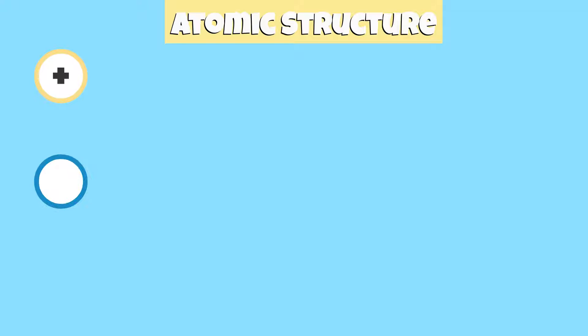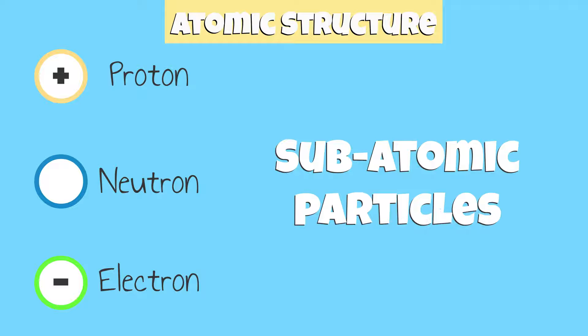So let's take a look at the structure of an atom. All atoms are made up of protons, neutrons, and electrons. We call these three building blocks of atoms subatomic particles.